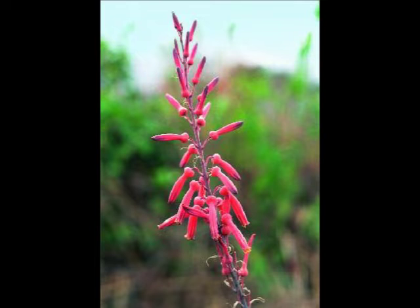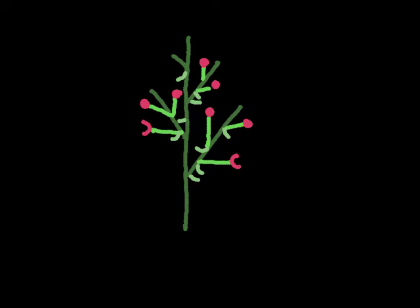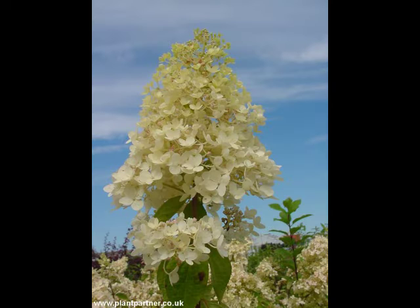The next one we're going to look at is a panicle. In this one you have the peduncle, but off the peduncle we have pedicels that don't just split once — they split a second time, and that makes a panicle. There are lots of lovely examples of panicles; a good one is the Hydrangea paniculata, which branches twice on the panicle.